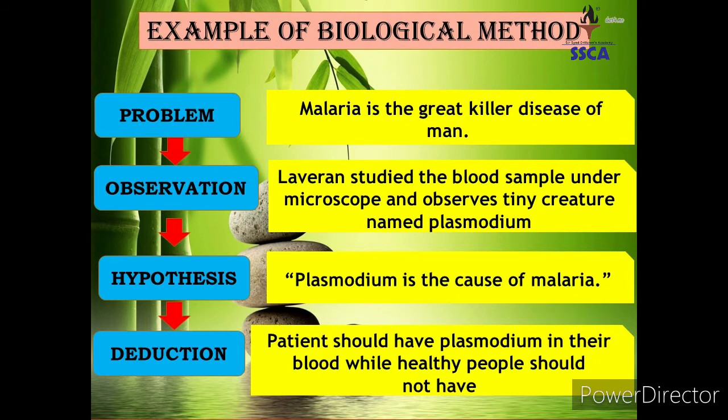After hypothesis, the next step is deduction. Lavaran presented a logical thinking: patients should have plasmodium in their blood — جتنے بھی malaria کے patients ہوں گے ان کے blood میں plasmodium کا ہونا ضروری ہے — while healthy people should not have plasmodium in their blood۔ یہ ایک logical thinking تھی، کوئی confirmation ابھی بھی نہیں ہوئی تھی۔